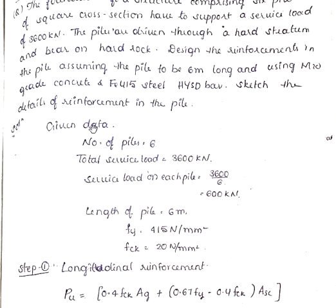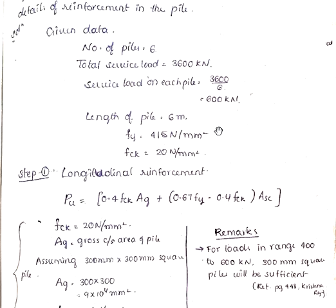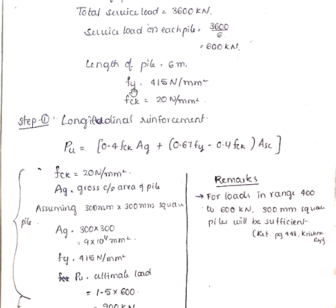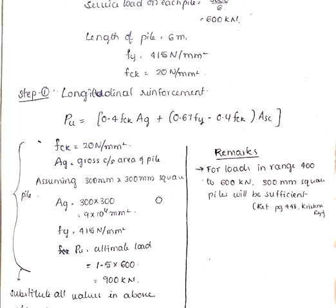In the solution I have written the given data from the entire discussion. We have the data as number of piles 6, total service load is 3600 kN, it has to be shared by 6 piles, so service load on each pile shall be 600 kN. Length of the pile as given in the problem is 6 m, FY is 415 N per mm squared, FCK is 20 N per mm squared. These two are based on the grade of steel and concrete.